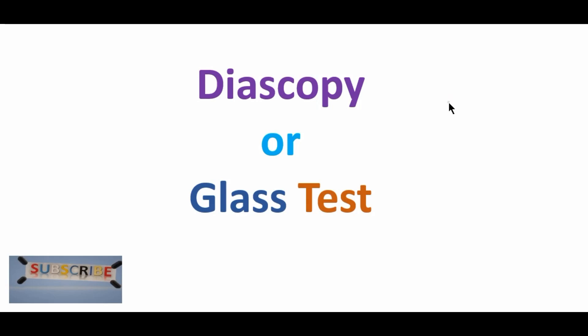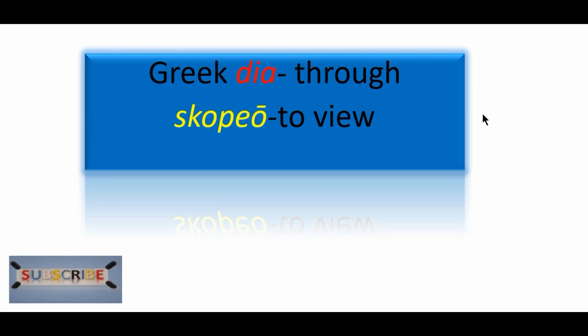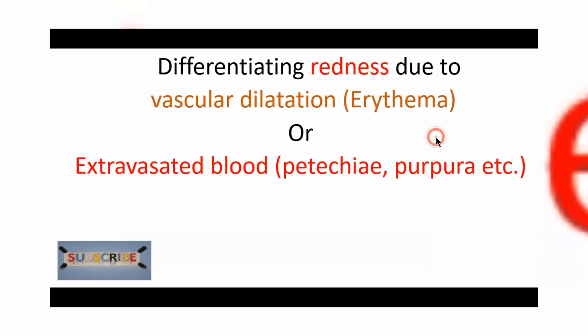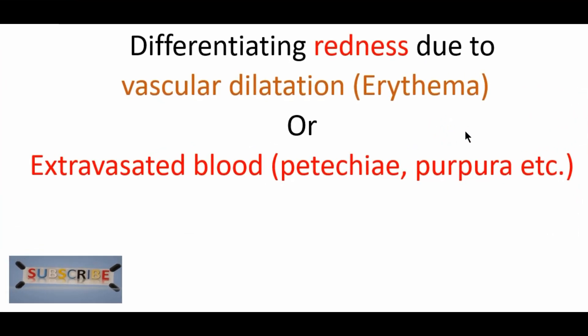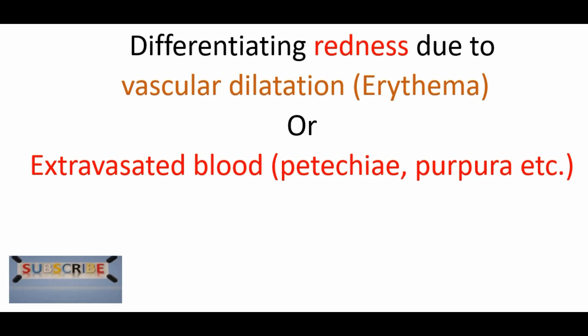Diascopy is a Greek word which arises from 'dia' meaning through, and 'scopio' meaning to view. So diascopy is to see something using a transparent thing, and it is used to differentiate redness or rash which is due to vascular dilatation, such as erythema, or due to extravasated blood.